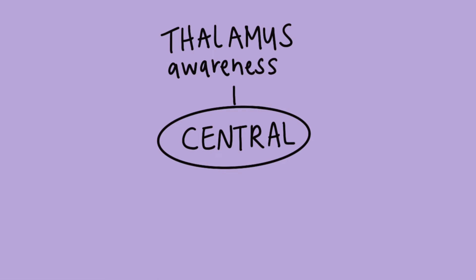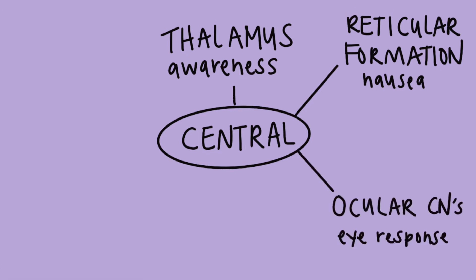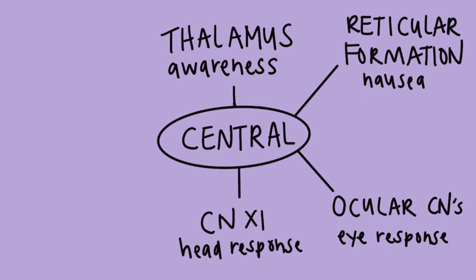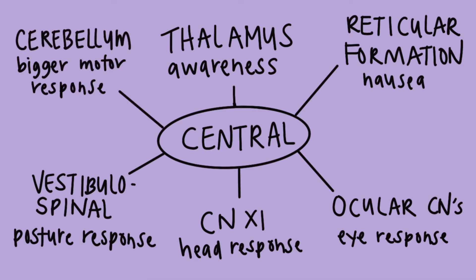The central vestibular system includes four vestibular nuclei at the brainstem, which then send the signals out to six different pathways: the thalamus, to produce conscious awareness of the body's position; the reticular formation, to produce a nausea response if appropriate; the ocular cranial nerves three, four, and six, to produce eye motions in response to that stimuli; cranial nerve 11, to produce a head response; the vestibulospinal tract, to produce a postural response; and the cerebellum, specifically the vestibulocerebellum, also known as the floccular nodule, which plans out motor responses and reflexes via spinal cord tracks.